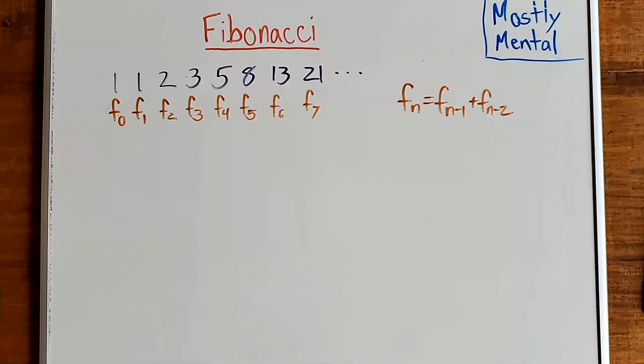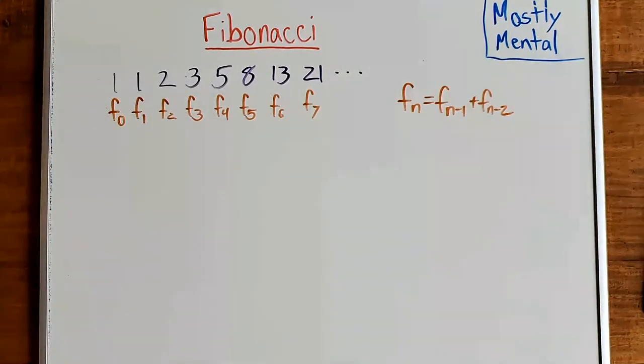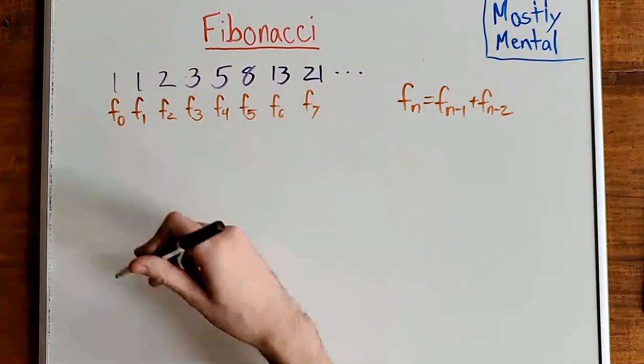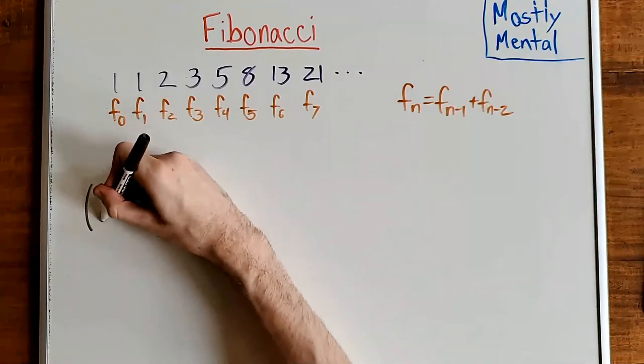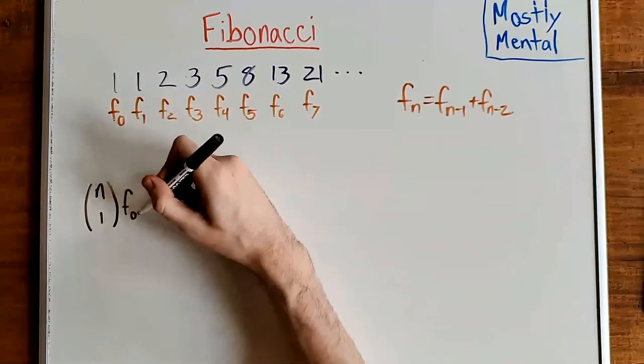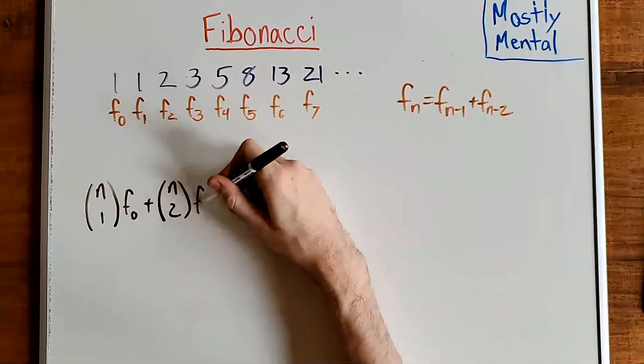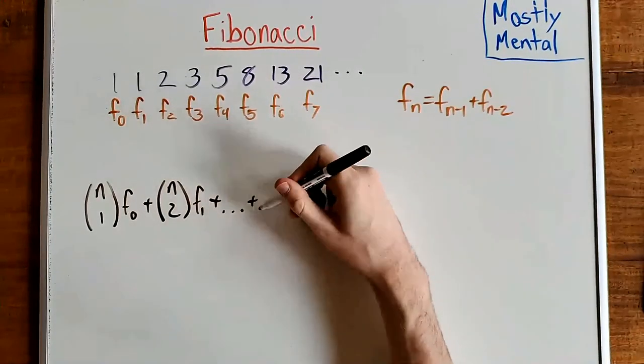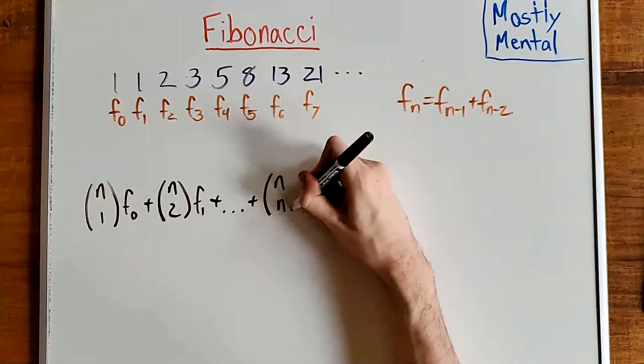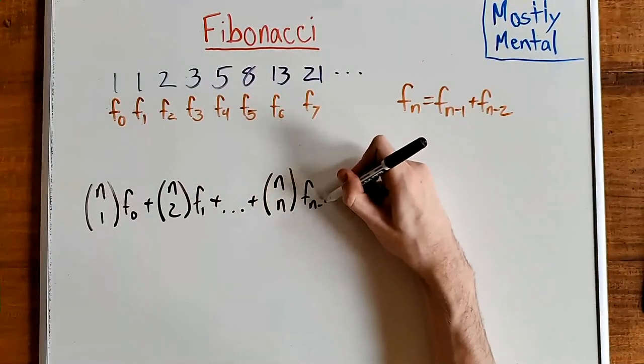There are plenty more interesting relationships between Fibonacci numbers. Like, enough to fill a whole quarterly journal with them. Link in the description. But my goal here is to get you playing with them, so here's a problem for you to try out. Consider the sum n choose 1, F sub 0, plus n choose 2, F sub 1, plus, and so on and so forth, up to n choose n, F sub n minus 1.